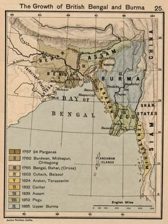The British promised increased investment in education and jobs in the new province called Eastern Bengal and Assam. Lord Curzon, the Viceroy of India, proposed the partition of Bengal and put it into effect on 16 October 1905. Dhaka, the former Mughal capital of Bengal, regained its status as a seat of government.